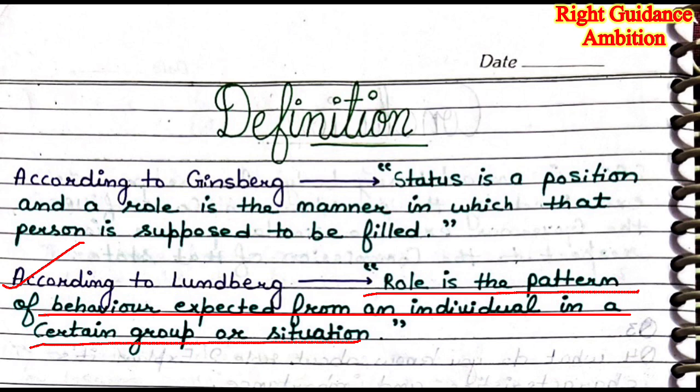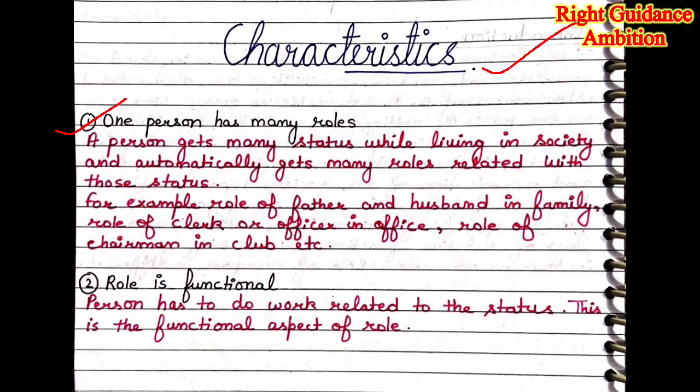When you become a member of a group, it will be decided that after being a member, you have to perform the functions of that member and how to play your role within that group or in a particular situation. Next, you have to write a heading: characteristics. First point is: one person has many roles.